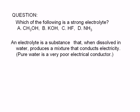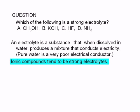Ionic compounds tend to be strong electrolytes. So all we have to do is find the ionic compound among the choices given. The easiest way to tell is by looking for the first element in the formula. If it's a metallic element, then you're looking at the formula of an ionic compound.